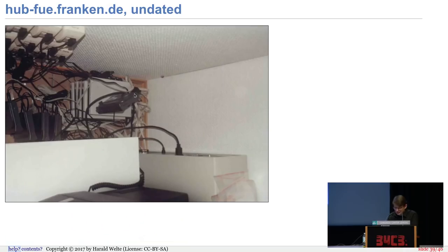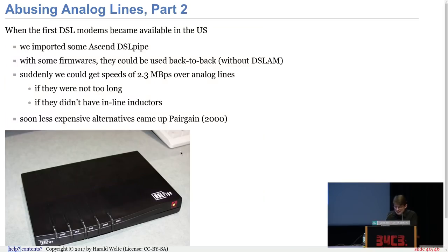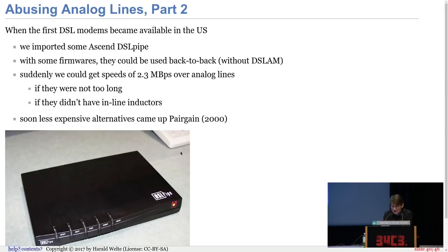Then we went into phase two of abusing analog telephone lines when the first DSL modems came out. We imported some ADSL DSL modems in 1999 from the US and with some firmwares you could operate them back-to-back without a DSLAM. One DSL modem at one end of the lease line, another at the other end. If you were close enough — like with a single hop at a single telephone exchange — you could get up to 2.3 megabits symmetric over your analog line. In 1999 that was quite a lot of speed, especially without paying for traffic.